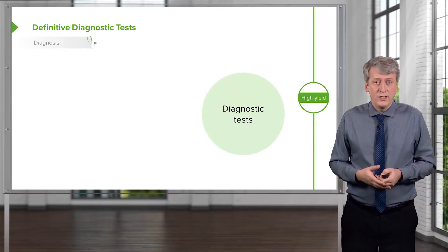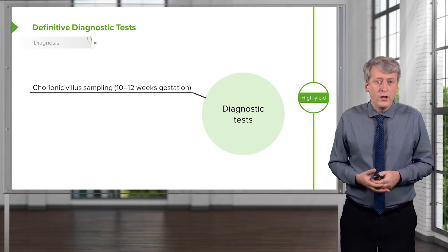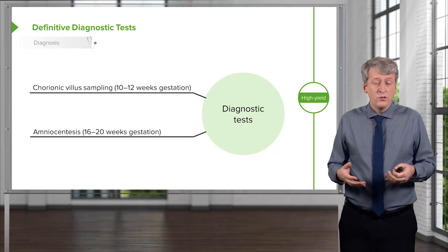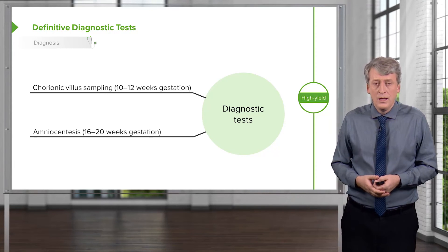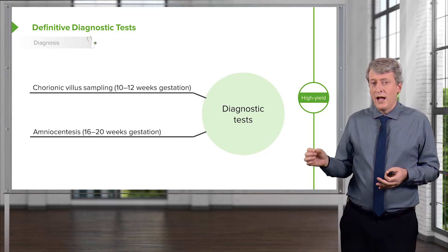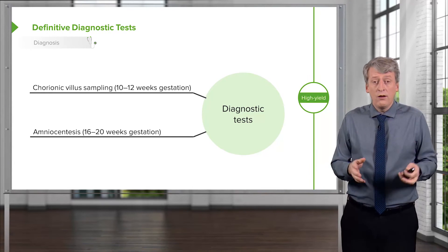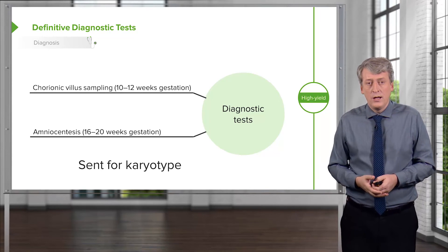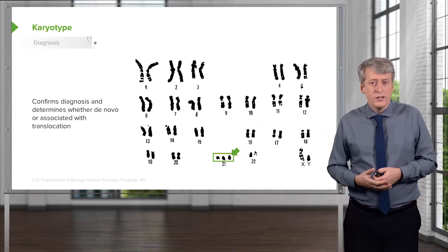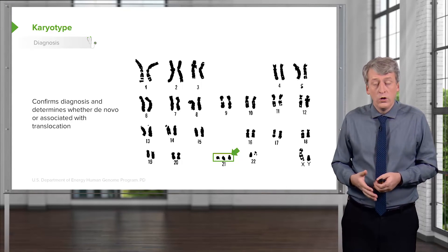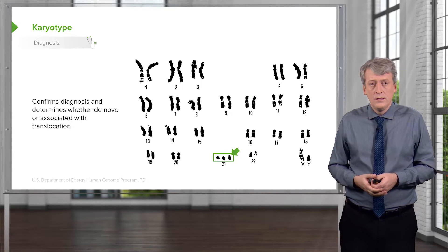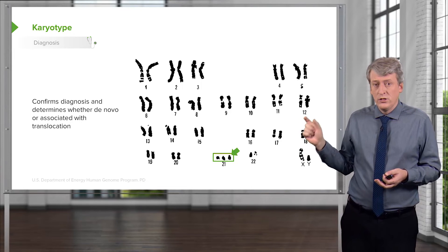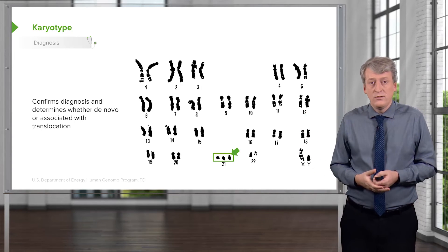The way we do definitive testing in utero is generally through chorionic villus sampling, which happens around 10 to 12 weeks of gestation, or amniocentesis around 16 to 20 weeks. We obtain actual cells from the baby and send them for karyotype. A karyotype is how we confirm a diagnosis or make an in utero diagnosis, confirming whether the patient has a translocation or a de novo three copies of chromosome 21 in their cells.